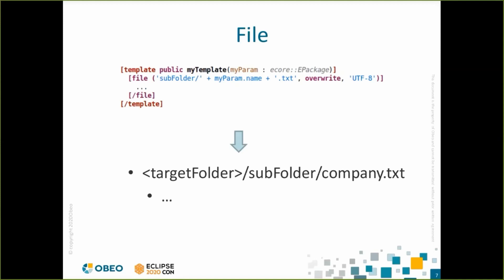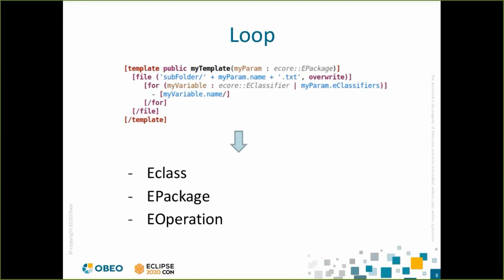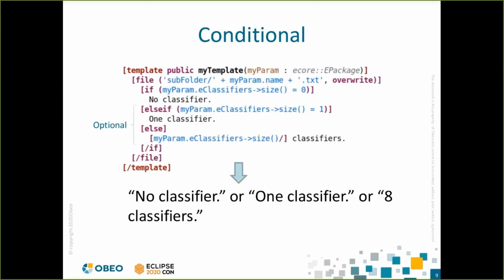The for statement allows you to loop over elements of a collection. Here we are looping over a list of classifiers and writing a dash and the classifier name on each line. To choose between many blocks to generate, you can use the if statement. Here we are generating no classifier, one classifier, or eight classifiers, depending on the number of classifiers present in the classifiers reference.